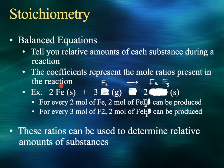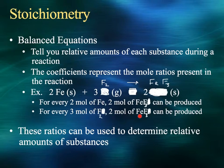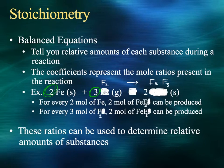For every three moles of F2 that you use as a reactant, you can produce two moles of FeF3. Those numbers — those coefficients out front — are the mole ratios. They tell you the relative amounts of each substance you've got.